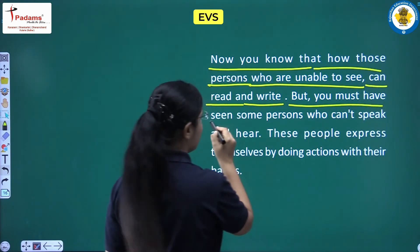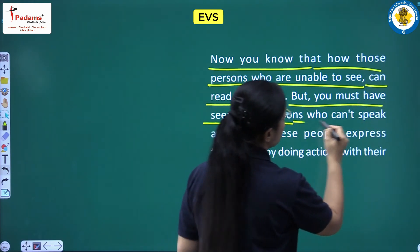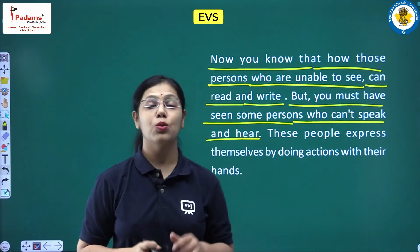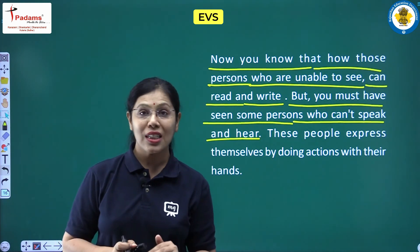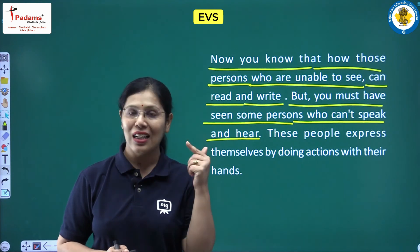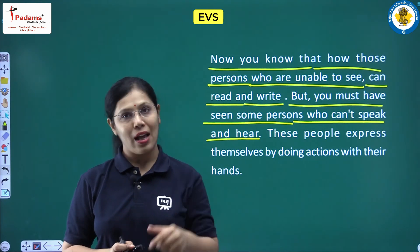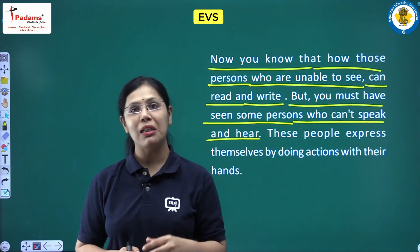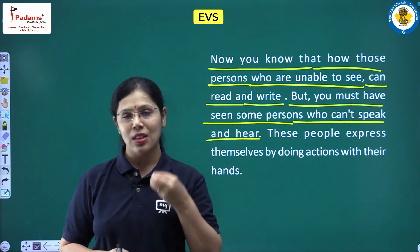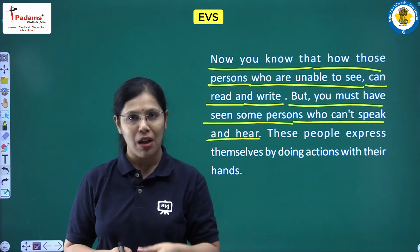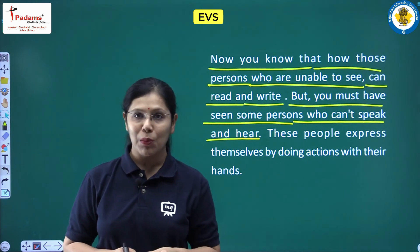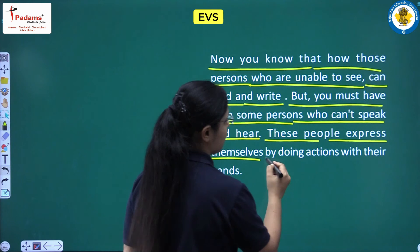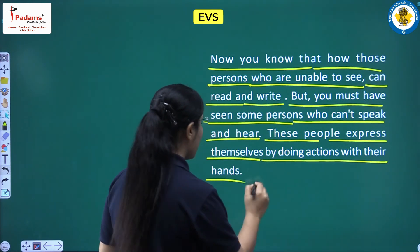But you must have seen some persons who can't speak and hear. There are some persons who are able to see but are not able to speak and hear. Their ears have some problems so they are not able to hear, and similarly their vocal cord or voice system is affected due to some reason, so they are not able to speak. These people express themselves by doing actions with their hands.